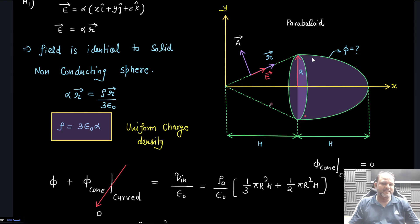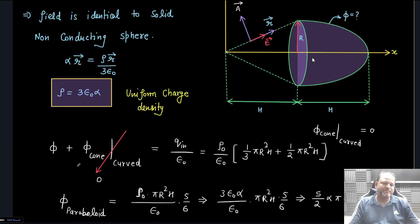So φ which we calculate is due to paraboloid φ_cone curved surface, and charge inside is density/ε₀ times volume of this cone plus volume of this paraboloid. Volume of the paraboloid is (1/2)πr²h and volume of the cone is (1/3)πr²h. This standard result you must remember.